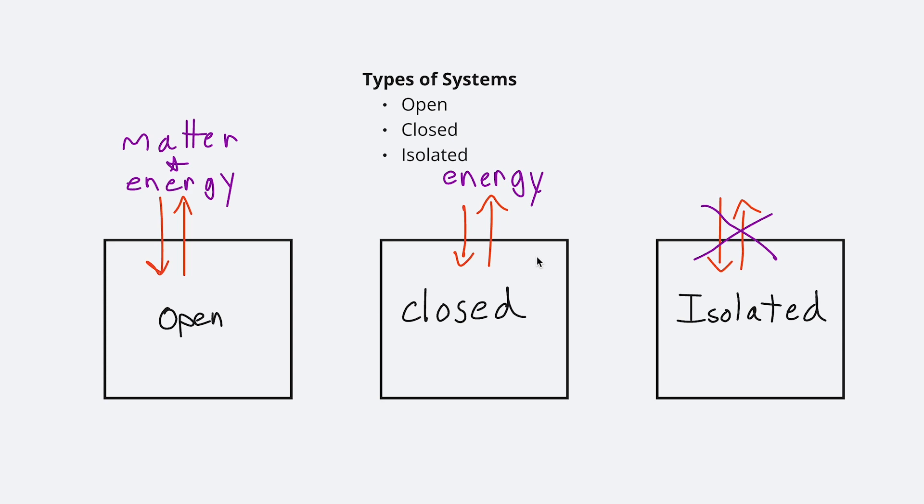An example of an isolated system, although it's not perfect, would be any type of thermos or cooler, because those are insulated and their purpose is to prevent as much energy exchange as possible.